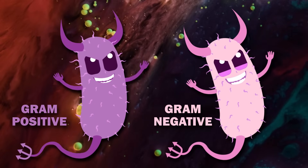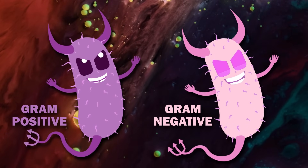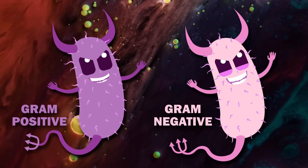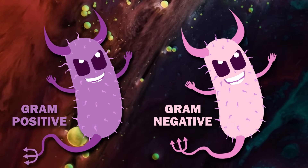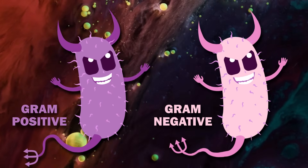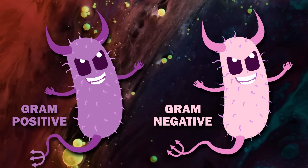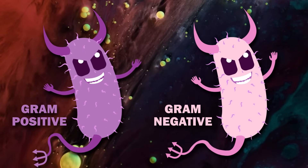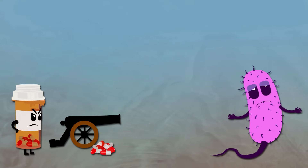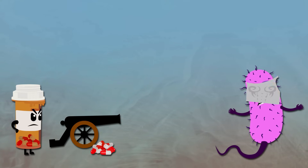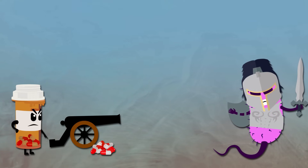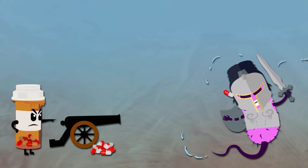Although both gram-positive and gram-negative bacteria can be pathogenic, gram-negative bacteria are more resistant to antibodies because of their impenetrable cell wall. Unfortunately, these bacteria also develop resistance more quickly.